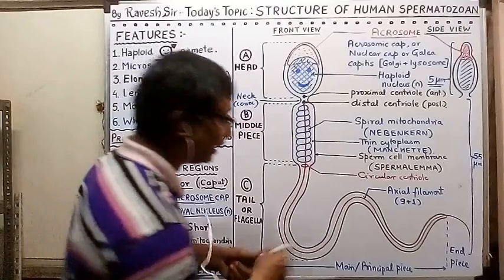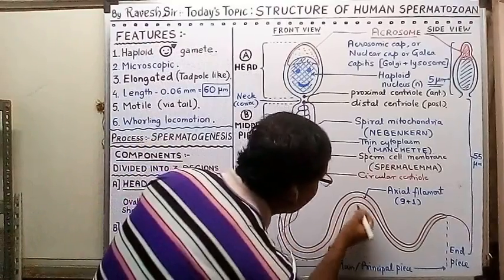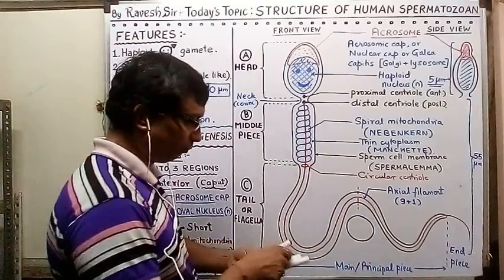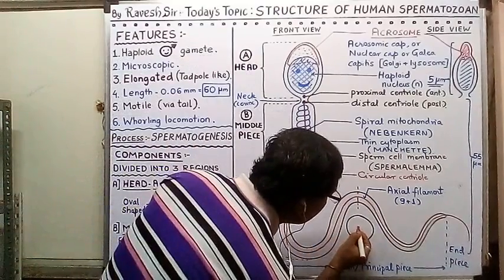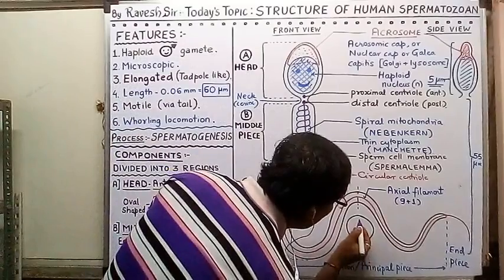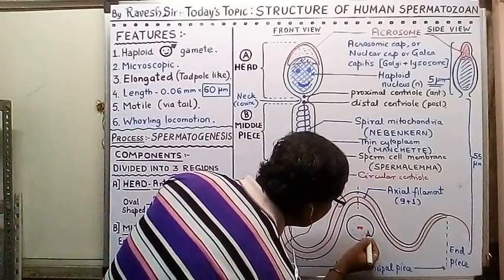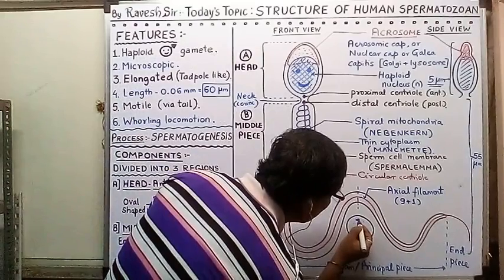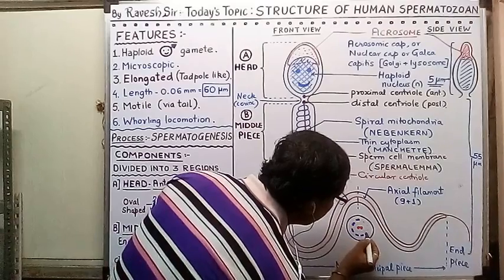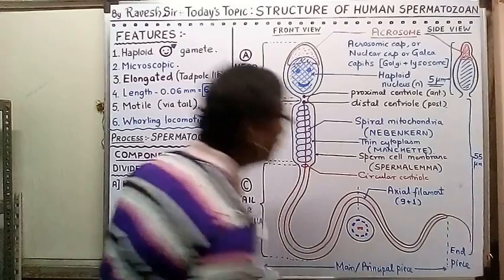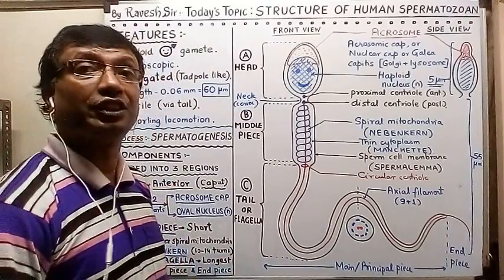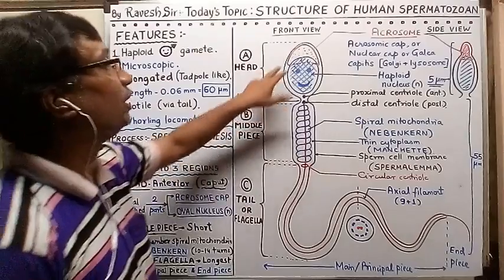The 9+2 arrangement consists of nine pairs of peripheral fibrils surrounding a central pair. With this, we have completed the structure of the sperm.